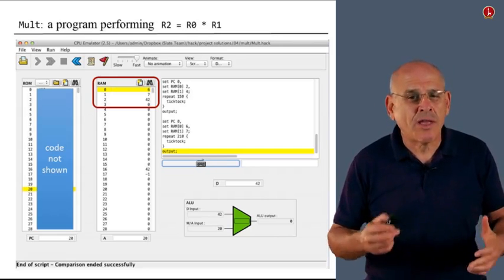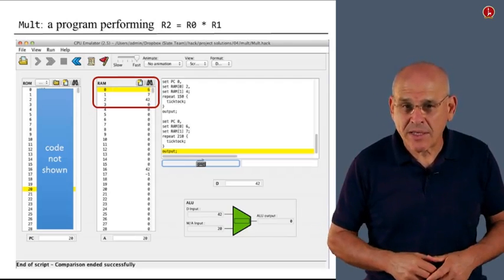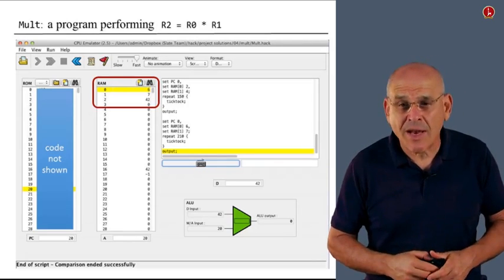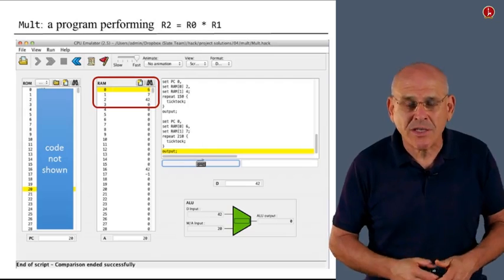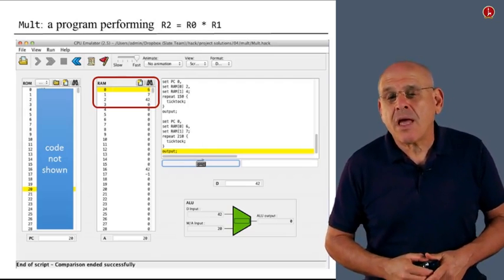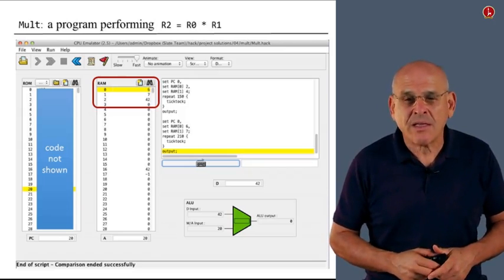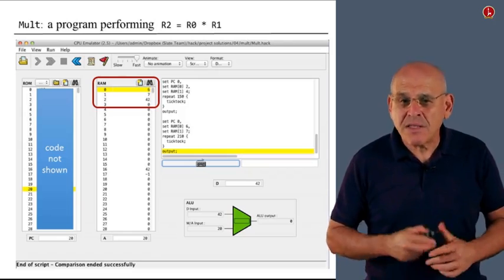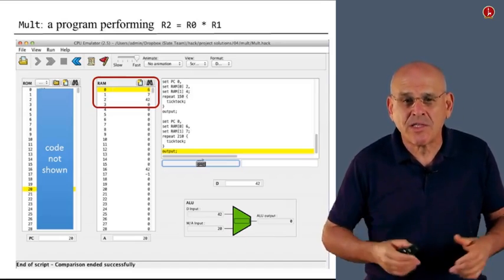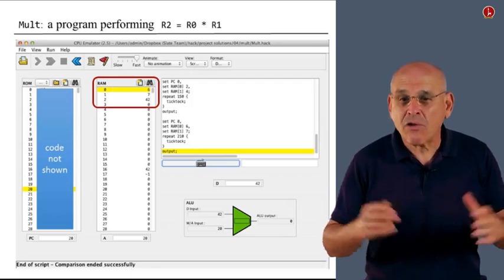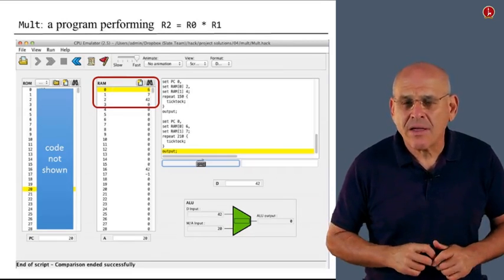By the way, those of you who will choose to take part two of this course, NAND to Tetris part two, will also go through the process of developing an operating system. And one thing that our operating system is going to deliver is a math library that features all sorts of mathematical operations. And one of these mathematical operations is going to be multiply. The multiplication algorithm that we will use in the operating system is extremely efficient and something that we don't expect you to do in this exercise. In this exercise, we simply expect you to somehow multiply the two numbers. Maybe you can try to do it as efficiently as you can, but we don't expect you to come up with some very fancy algorithms to carry out multiplication.